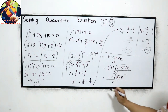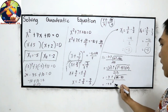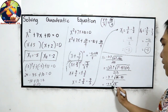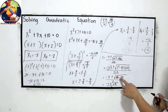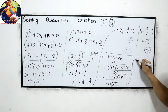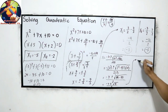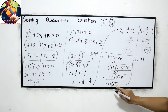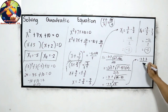Let us simplify. We have negative 7, plus or minus the square root of 9, over 2 — because 49 minus 40 is 9. Since 9 is a perfect square number, negative 7 plus or minus the square root of 9 gives negative 7 plus or minus 3, over 2.